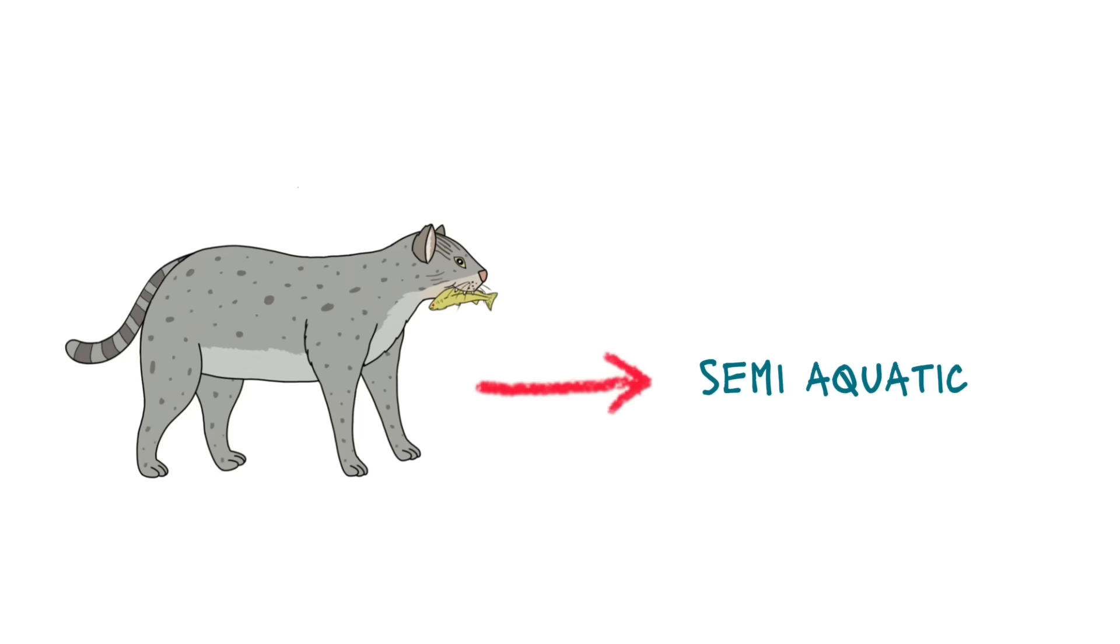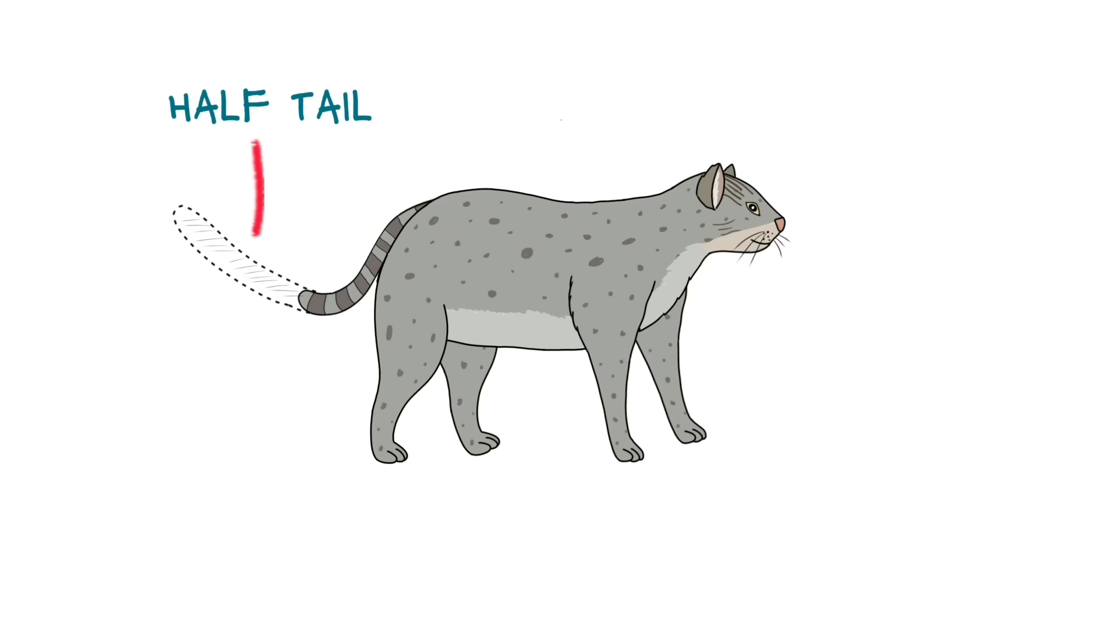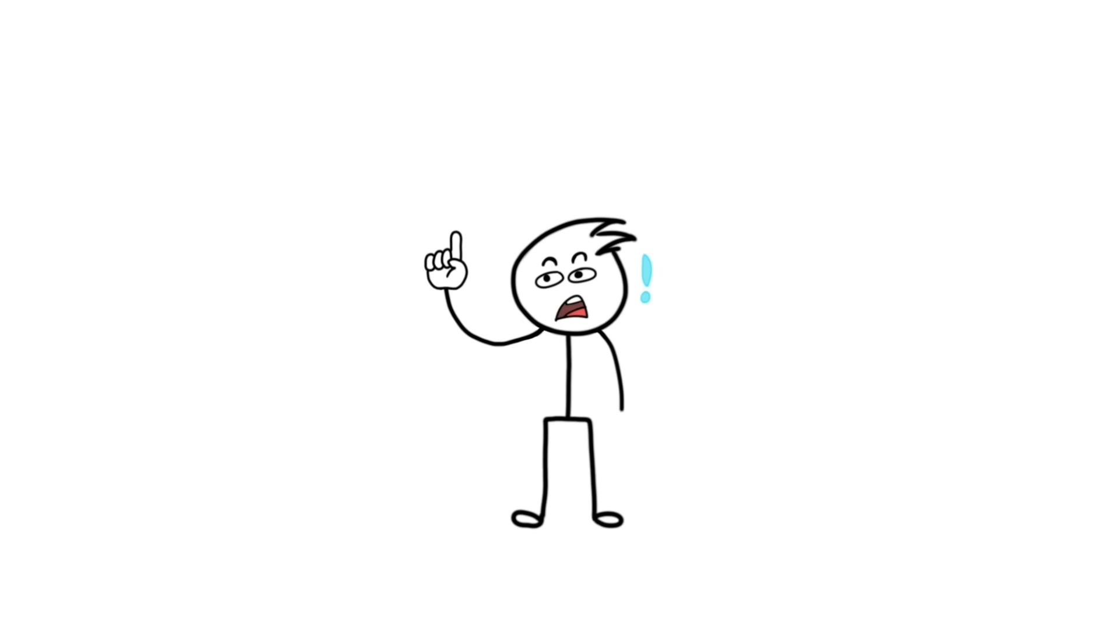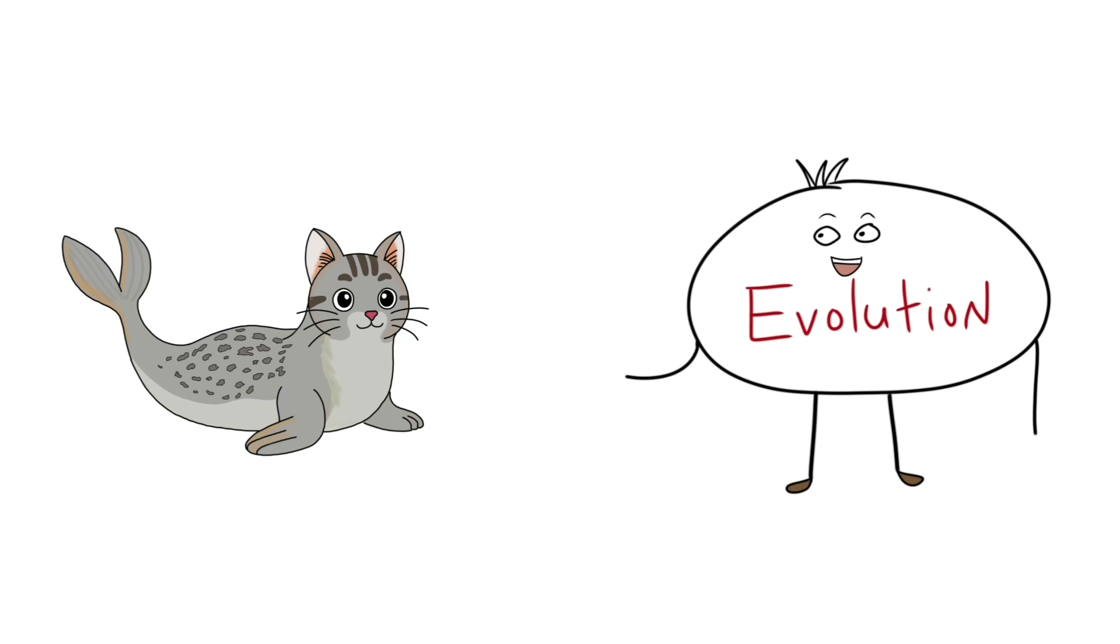It's semi-aquatic now. Evolution chopped its tail in half, and its legs are webbed now. In the future, evolution will change this cat into this kind of creature. Then it will say, 'Well, you are officially a catfish now.'